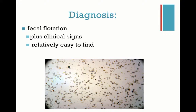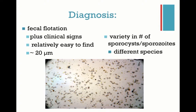It can be relatively easy to find. So unlike Giardia, it's not as tricky to find. Once you know what you're looking for, you can usually find it. It is still pretty small but a little bit bigger than Giardia on a slide. You can have different species on your fecal, so you want to check for different varieties of the sporocytes and the sporozoites, which will lead you to identify different species.